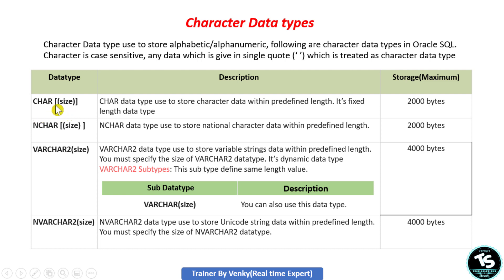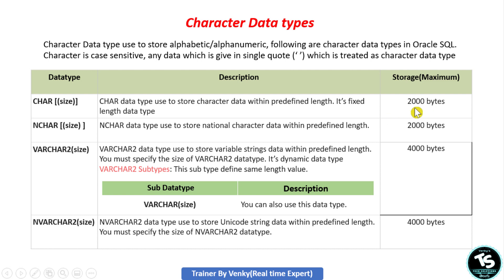I mention size in brackets like this: if it's not mandatory I use regular brackets, and if it's mandatory I use open parenthesis notation. CHAR data type size is not mandatory — that is why I mentioned it in regular brackets. The CHAR data type is used to store character data in a table column. It is a fixed-length data type. The maximum storage it allows is 2000 bytes.